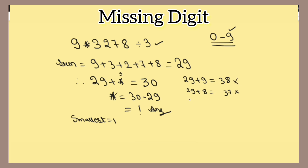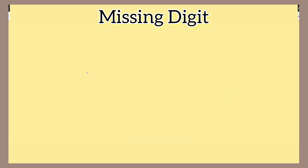Going backward: 29 plus 7 equals 36, and 36 is divisible by 3. That means the largest digit for the star is 7. I hope that is clear — please practice this and you will understand.